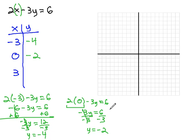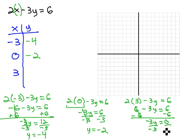Our last number to plug in for x is 3. 2 times 3 minus 3y equals 6. So we have 6 minus 3y equals 6. Subtract 6 from both sides to get negative 3y equals 0. Divide by negative 3, and we get y equals 0. So when x is 3, y is corresponding with a value of 0.